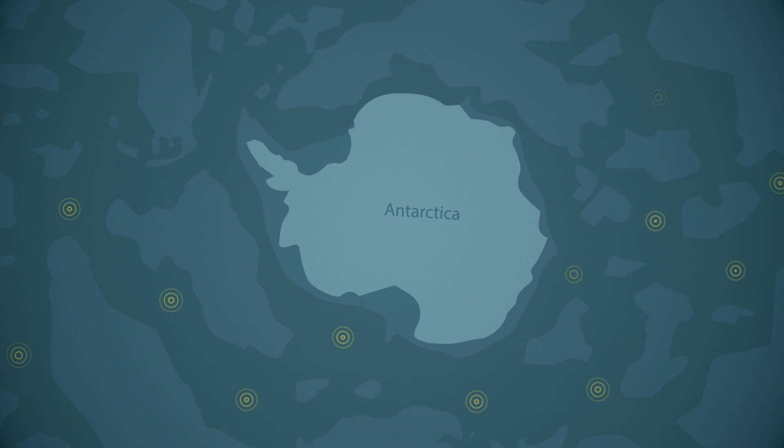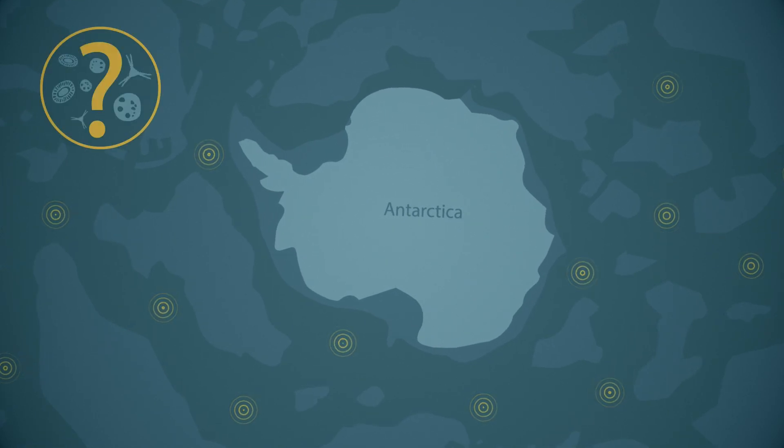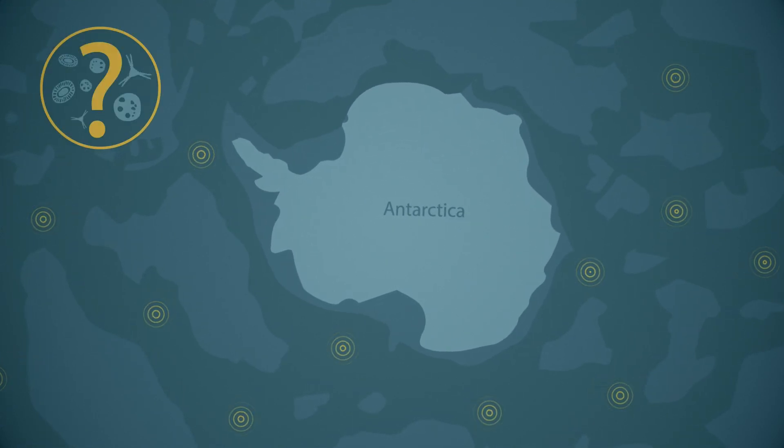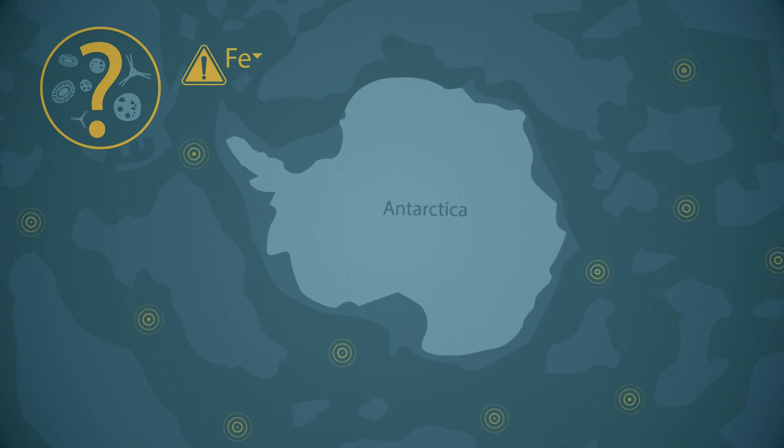By doing so, they have revealed why microalgae in the Southern Ocean grows very poorly. In fact, the microalgae are iron depleted as in many other parts of the world.